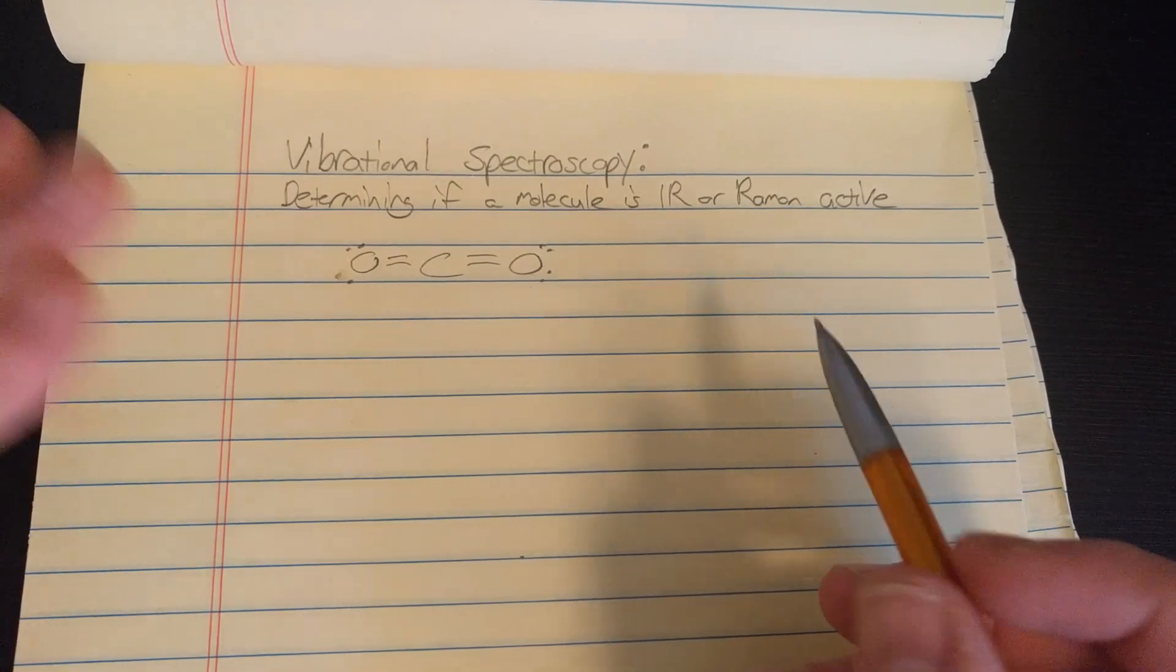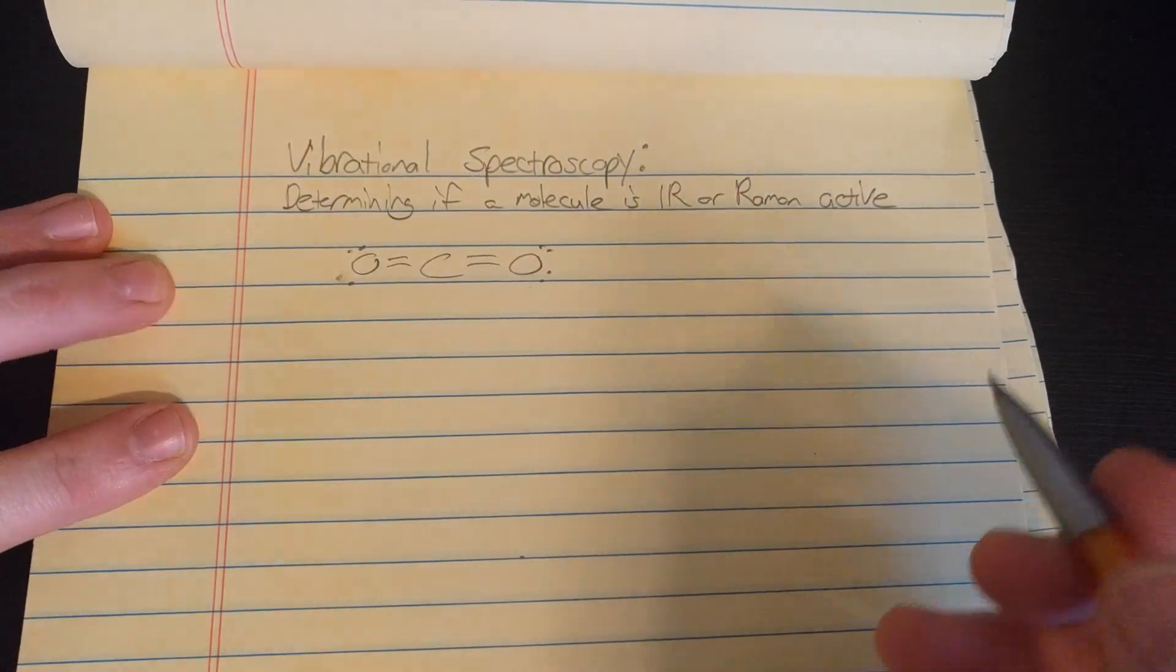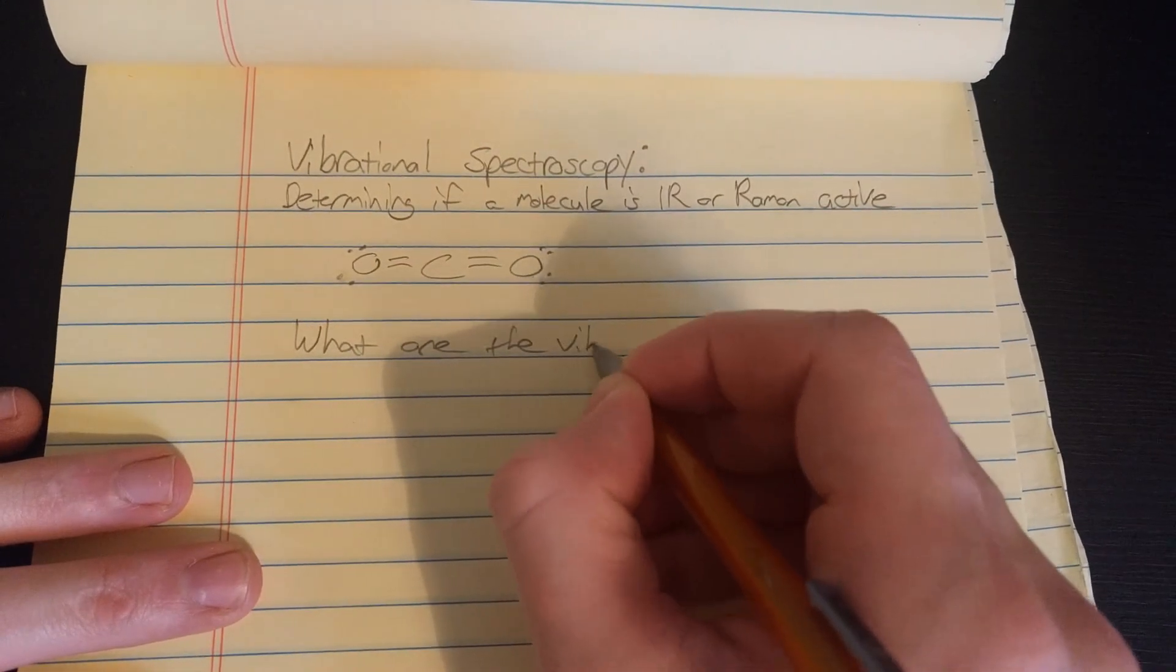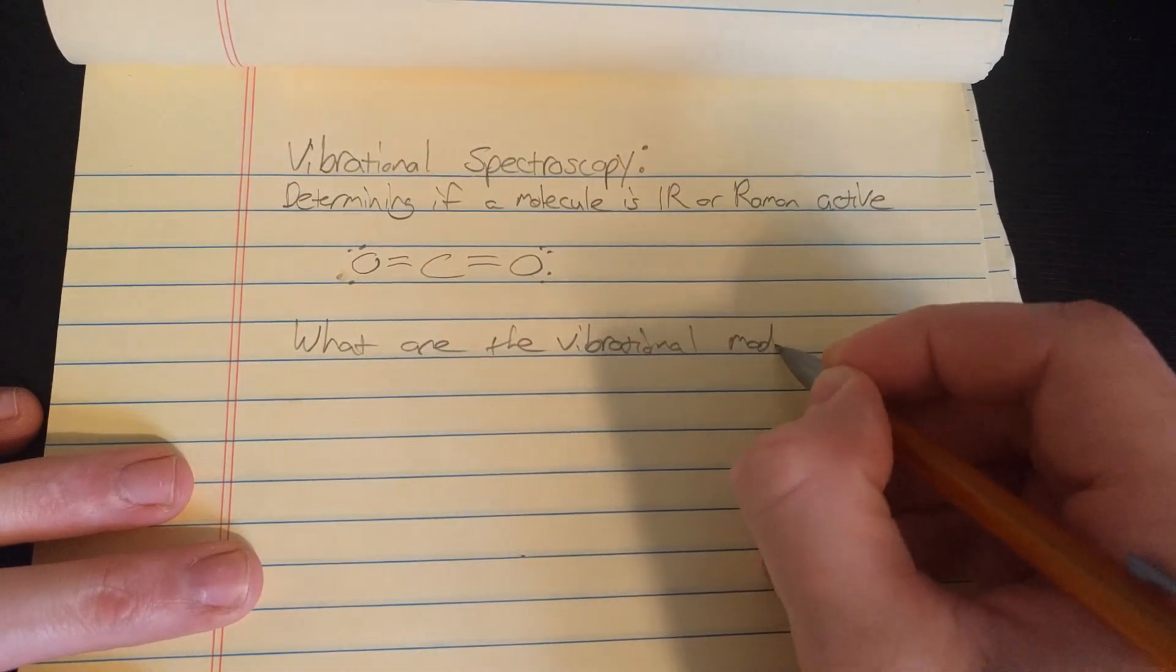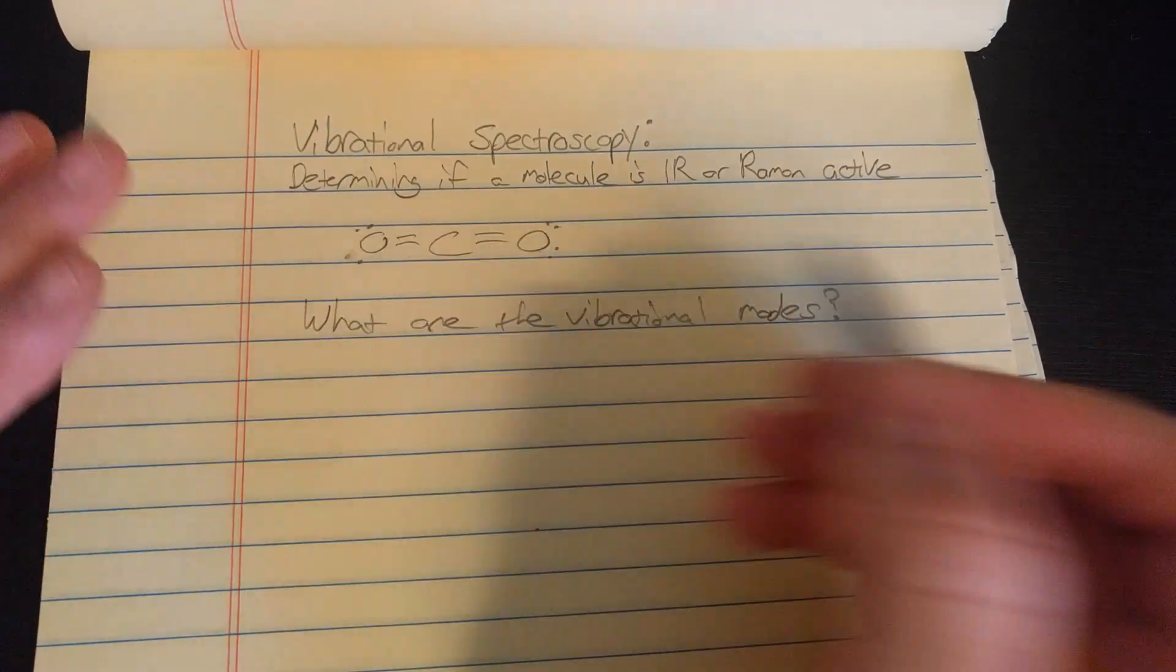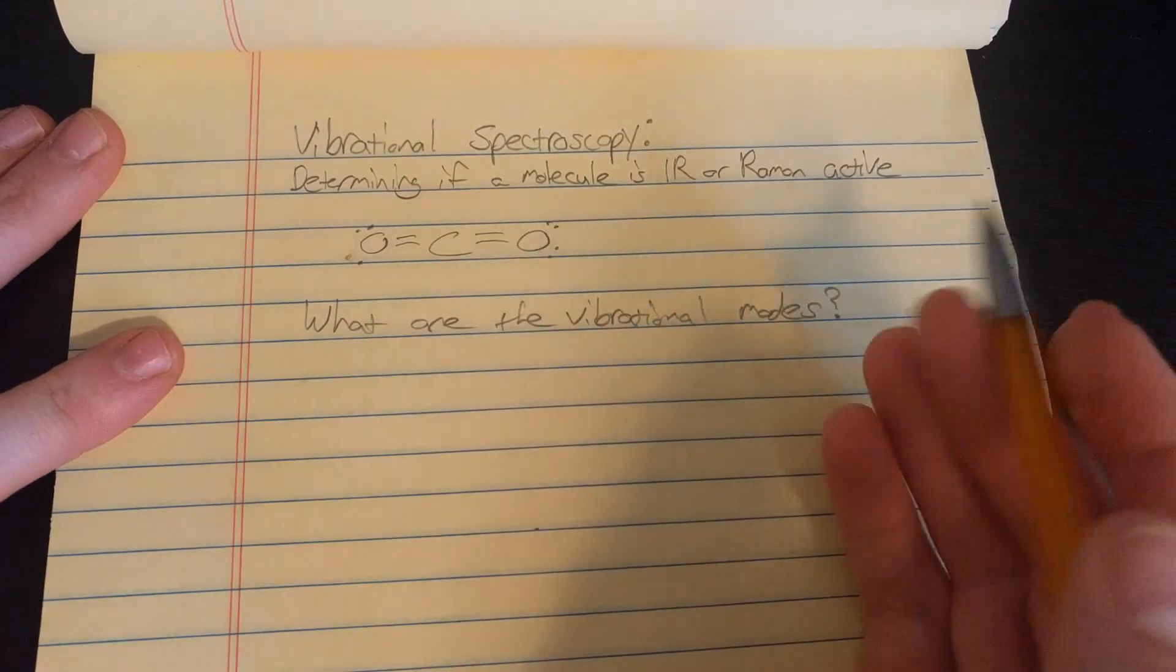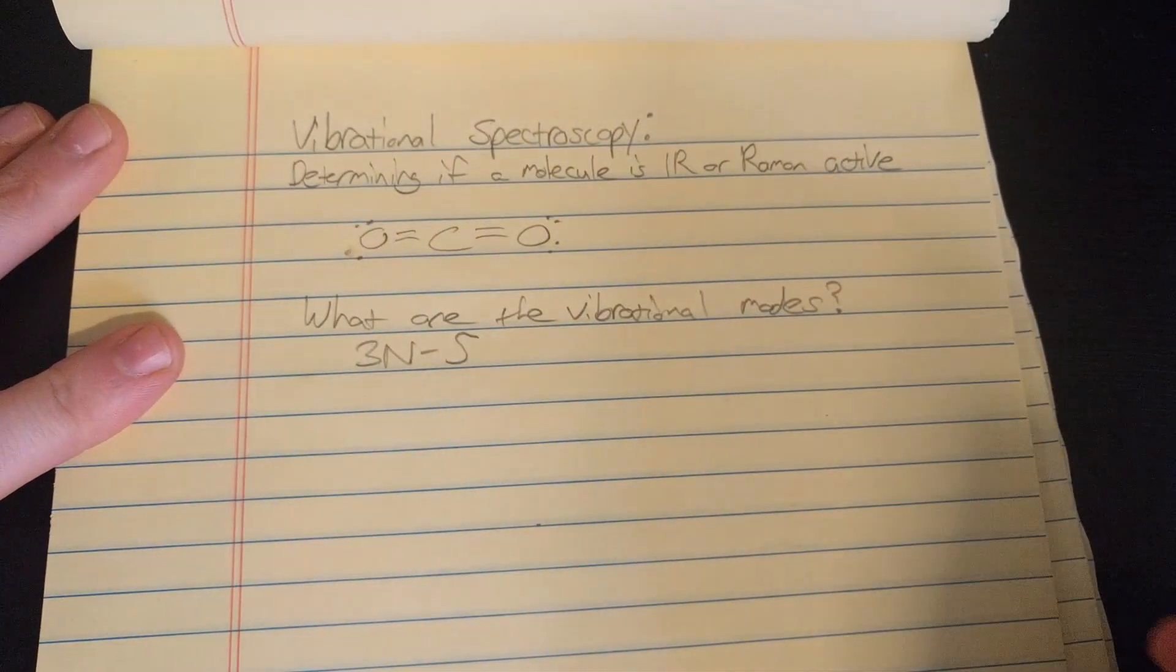Now to determine if this molecule is IR or Raman active, first we have to ask what are the vibrational modes. Well maybe even before that we should ask how many. So the rule to determine how many vibrational modes is 3n minus 6, or if it's linear, which we have a linear molecule here, it's 3n minus 5, where n is the number of atoms.